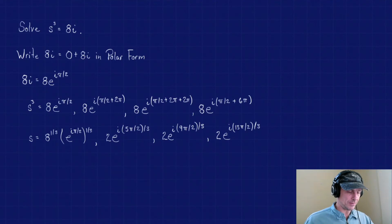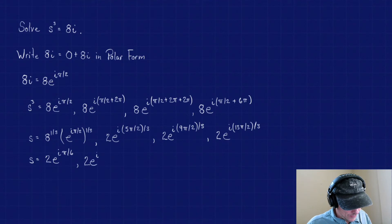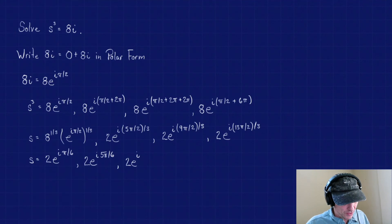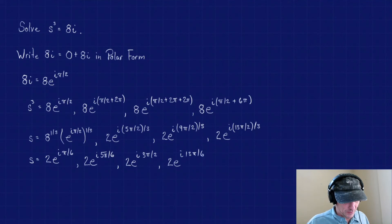Let's clean these up a little bit. We have s equals 2 e to the i pi over 6. Our next root comes from 2 e to the i 5 pi over 6. Our next root comes from 2 e to the i 3 pi over 2. And our last one becomes 2 e to the i 13 pi over 6. And we're going to stop there — we'll see why shortly.